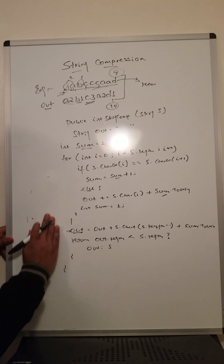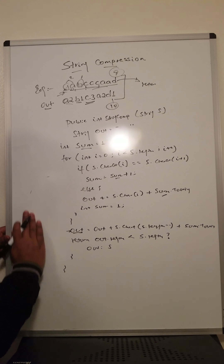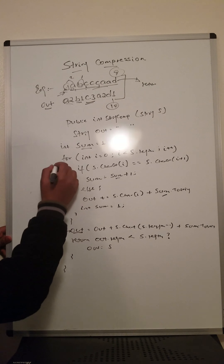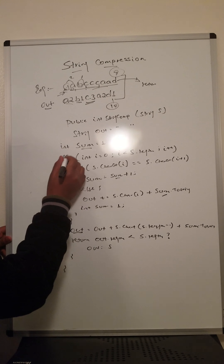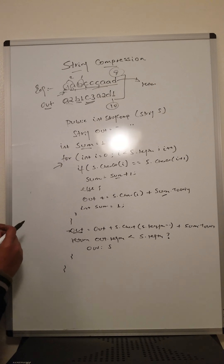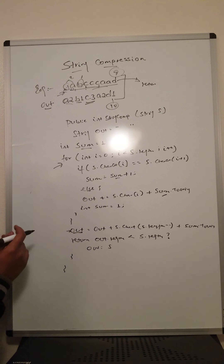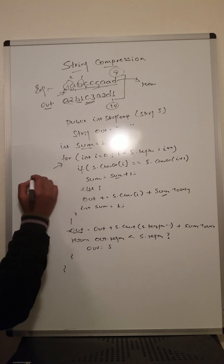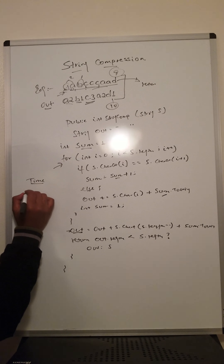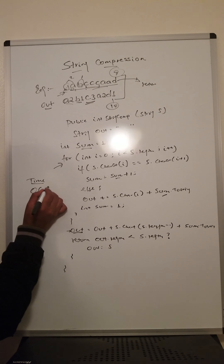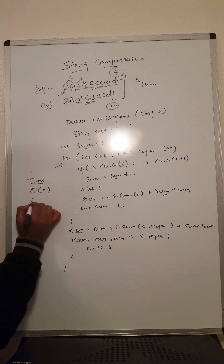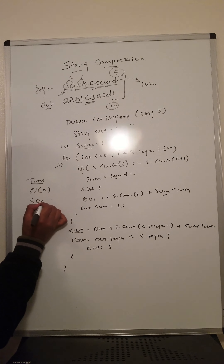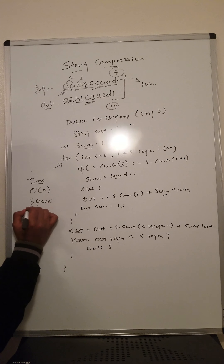The time complexity is O(n) since we use only one for loop. The space complexity is O(1).